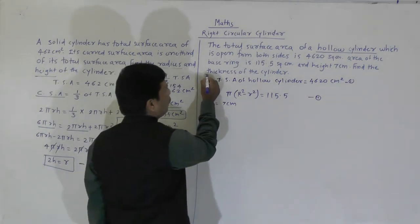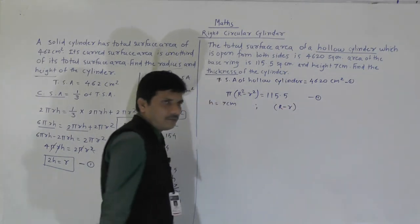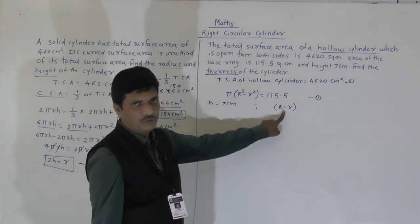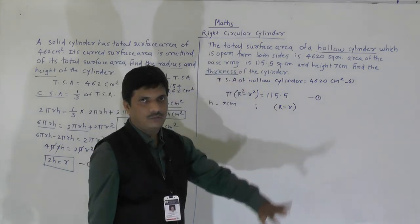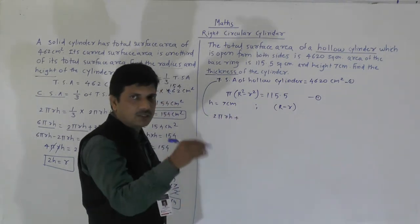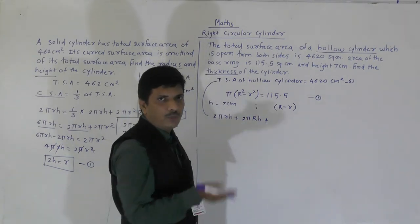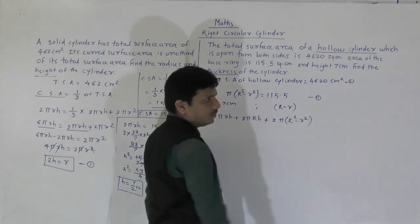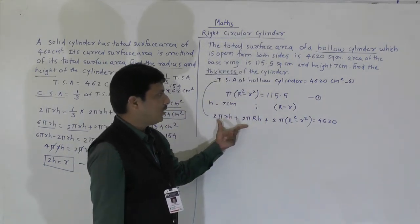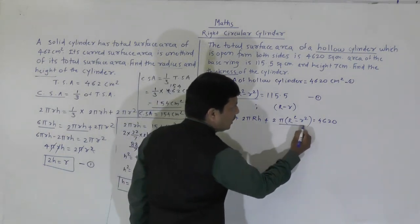So we have to find the thickness of the cylinder — that is, the value of R minus r. First we will use the TSA formula for a hollow cylinder: TSA equals 2πRH (curved surface area of inner cylinder) plus 2πrH (curved surface area of outer cylinder) plus 2π(R² - r²) (area of both the rims, top and bottom), and this equals 4620 cm². The value of π(R² - r²) is 150.5, so we can substitute that.